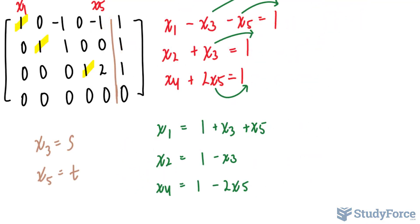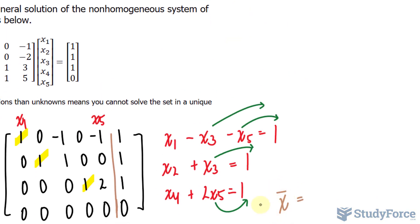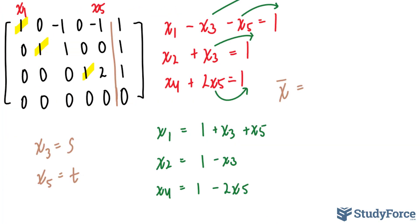Now to write the general solution of this, you start off by saying that the column vector representing the variables is equal to, and just to be clear here, this x bar symbol represents this column vector. That is equal to the constants in the order in which they are in.